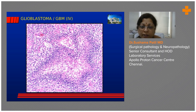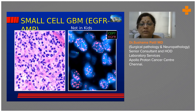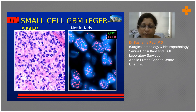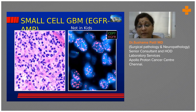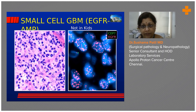Palisading necrosis is a hallmark feature of a high grade glioma — we call it GBM, glioblastoma. Another type is the small cell variant glioblastoma, which is most often mistaken for anaplastic oligodendroglioma. This is a very aggressive tumor and you should not miss it. The cells are very bland but mitotically very active. When you see those two things together, you should worry about small cell GBM — and most of the time these have EGFR amplifications.